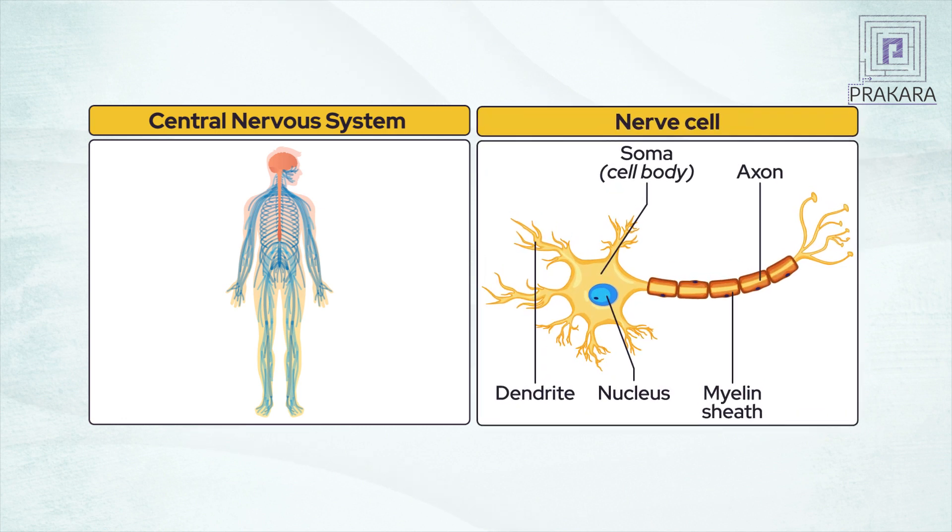As we have seen in the previous video, the nerve cell or the neuron is a structural and functional unit of the central nervous system or any nervous system for that matter.